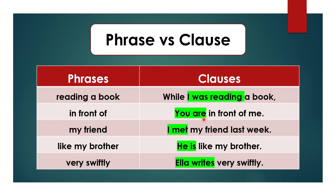Remember: when there is no other main verb given in the sentence, an auxiliary verb like 'am,' 'is,' or 'was' works as the main verb. 'Then my friend' — a group of words with no subject-verb combination, so this is a phrase. 'I met my friend last week' — 'I' is the subject and 'met' is the verb, the past form of 'meet,' expressing complete meaning, so this is a clause. 'Like my brother' — no subject-verb combination, so this is a phrase and it doesn't make any sense either.